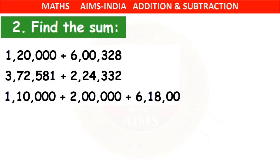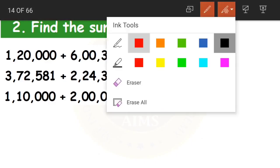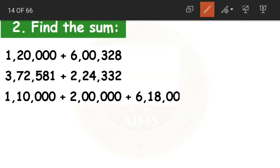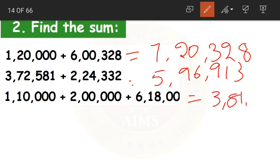Hello children, welcome to AIMS India's online classes. As I promised in the previous video, let us first discuss the answers for homework problems. The answer for the first question is seven lakhs twenty thousand three hundred and twenty-eight. For the next question it is five lakhs ninety-six thousand nine hundred and thirteen. For the third question it is three lakhs eighty-one thousand eight hundred.